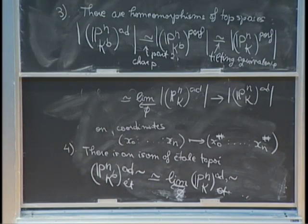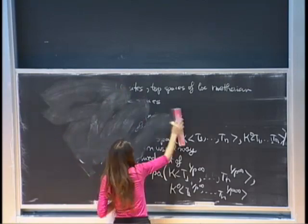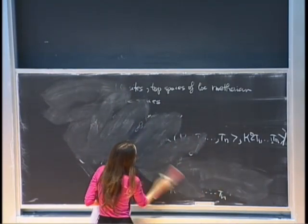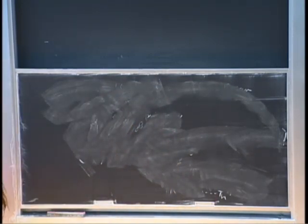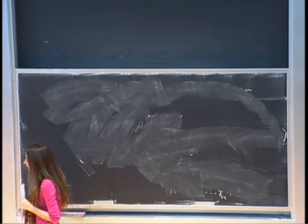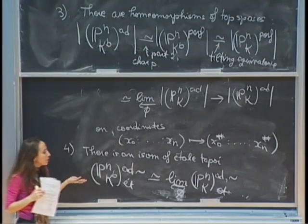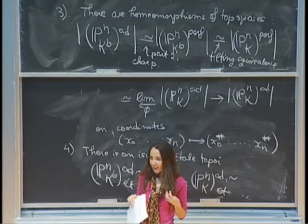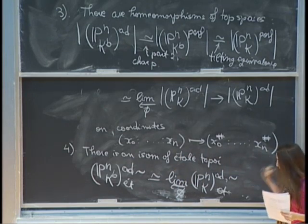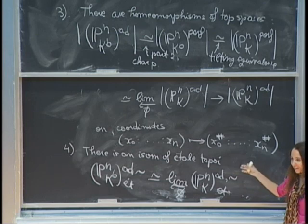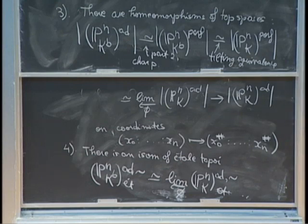Moreover, if you restrict to some subset and have pi-inverse of U equal to V, then there's a commutative diagram of topoi. The twiddle notation means we're looking at the étale topos instead of the étale site — it's a projective limit of fiber topoi, which in this case means a compatible system of sheaves on the P^n's.